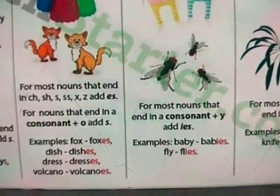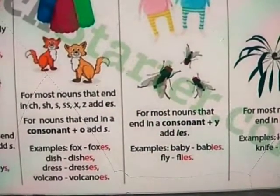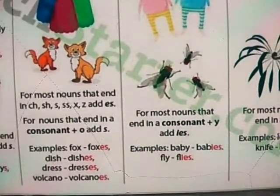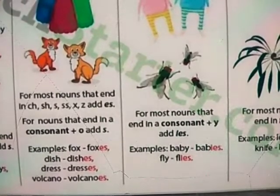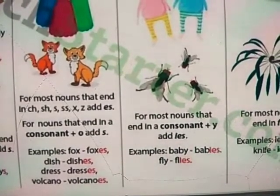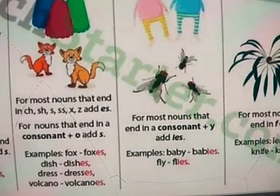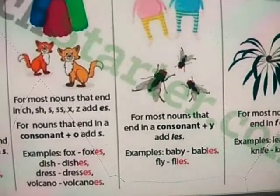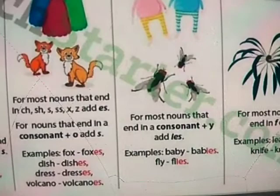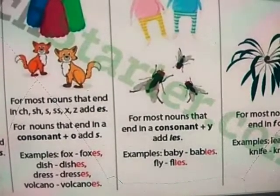For example, the word baby — B, A, B, Y — it ends with -Y. We remove the -Y and add -IES, making it babies.